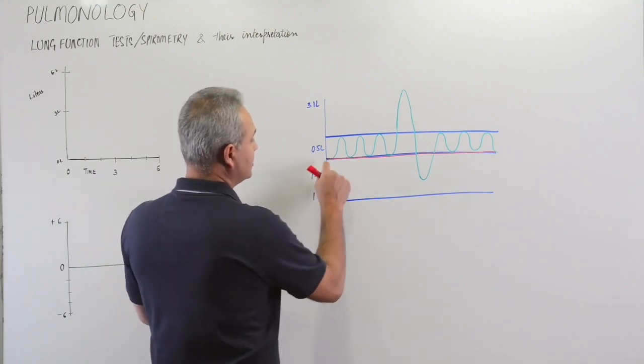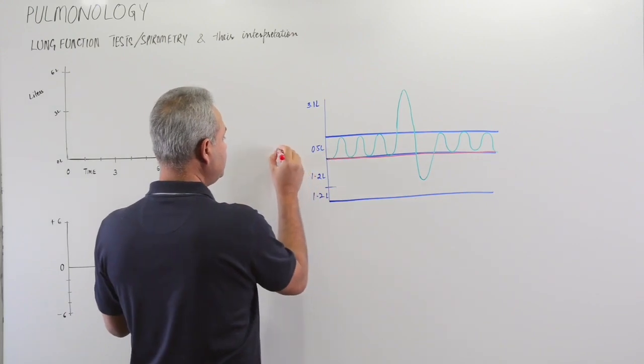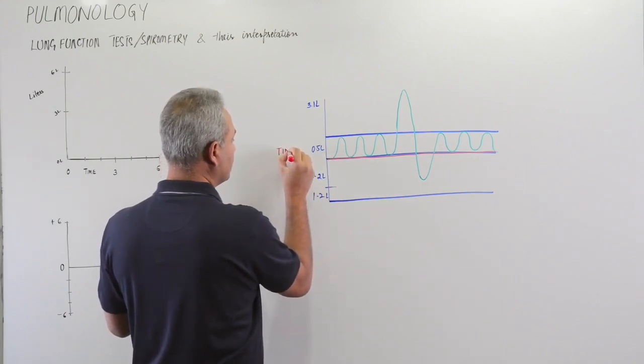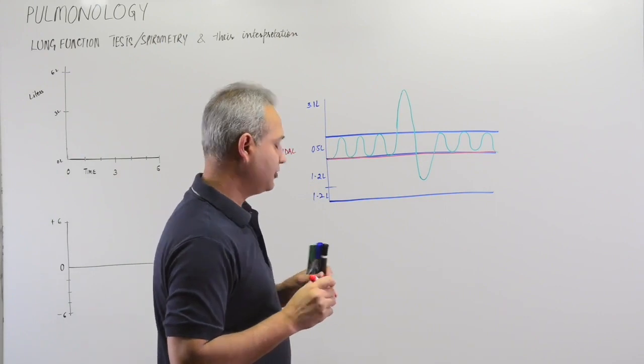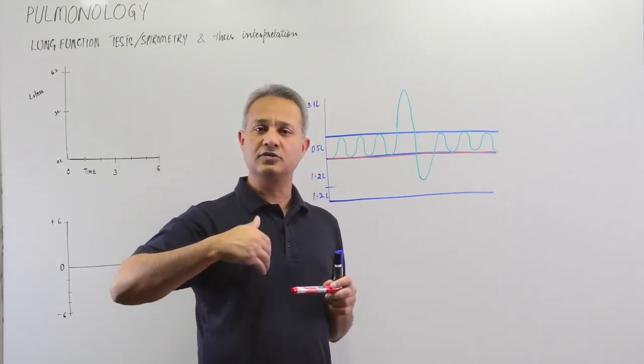What we have here is the tidal volume. Tidal volume we have done before - it is about half a liter of volume which is part of quiet breathing.